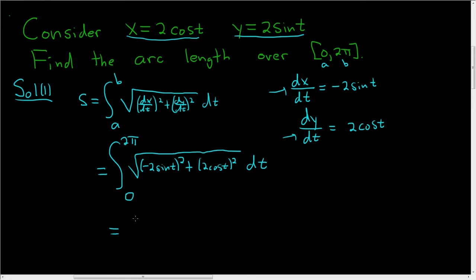Let's keep going. So this is the definite integral from 0 to 2π. Now, when you square negative 2 sine t, you end up with 4 sin² t.